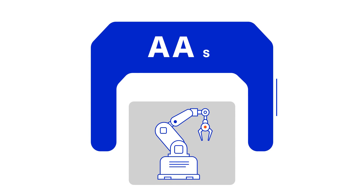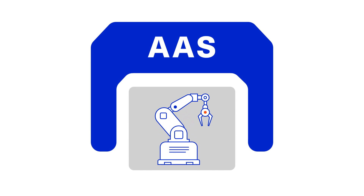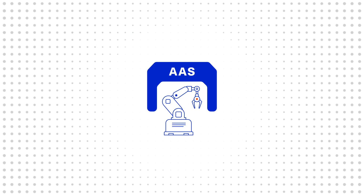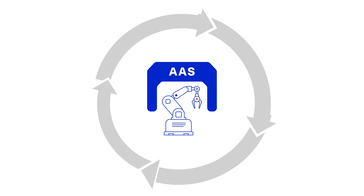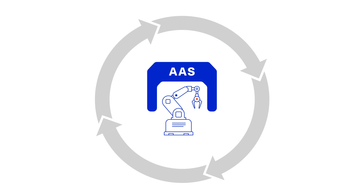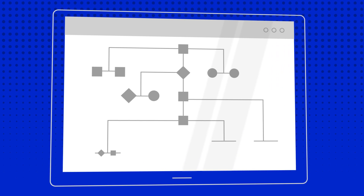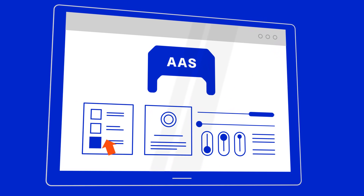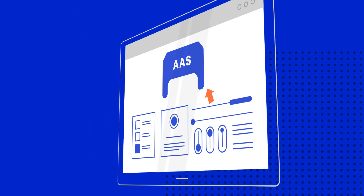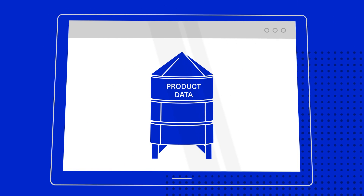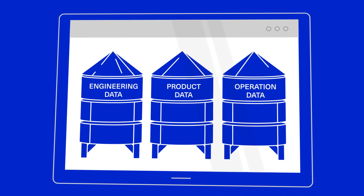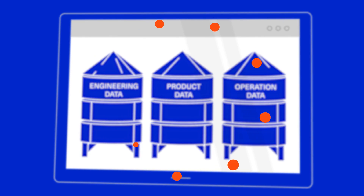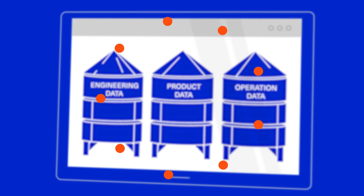We now have the Asset Administration Shell. It makes data available quickly and easily throughout the entire lifecycle. All this is possible thanks to the standardised software structure, interface and semantics. Data from products, engineering and operation are available to all participants of the Value Network.